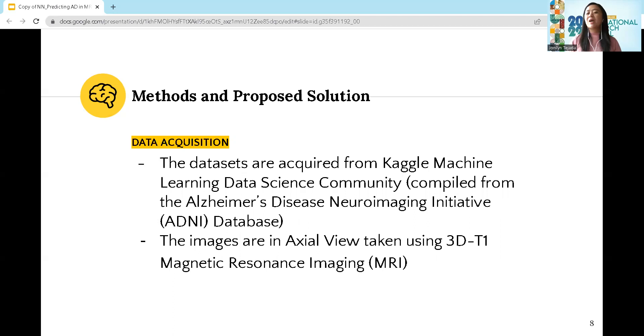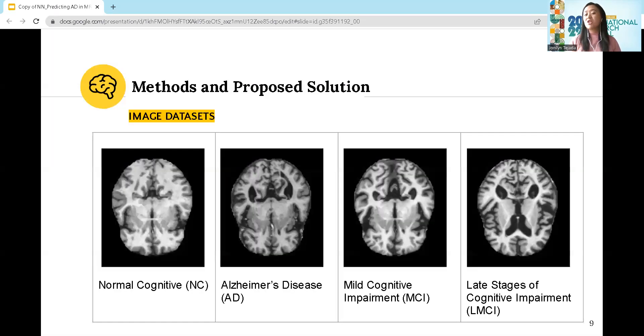For data acquisition, I used datasets acquired from the Kaggle machine learning data science community, which are compilations from the Alzheimer's Disease Neuroimaging Initiative (ADNI) database. The images are taken in axial view using the 3D T1 magnetic resonance imaging.